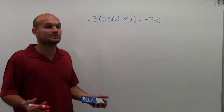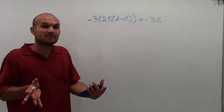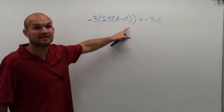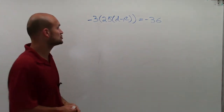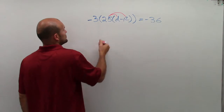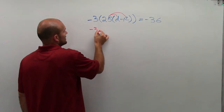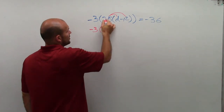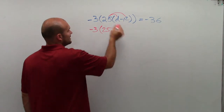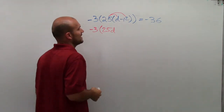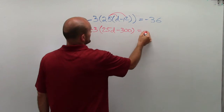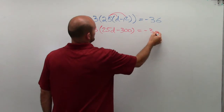The first thing is what we know what to do: simplify it by using your order of operations. You can see I have a lot of parentheses here, meaning I'm going to be using distributive property a lot. The first distributive property I would do would be right here. So I'd have a negative 3, and then I'd multiply 25 times d, which is 25d. And then 25 times negative 12, which would be a negative 300, equals a negative 36.